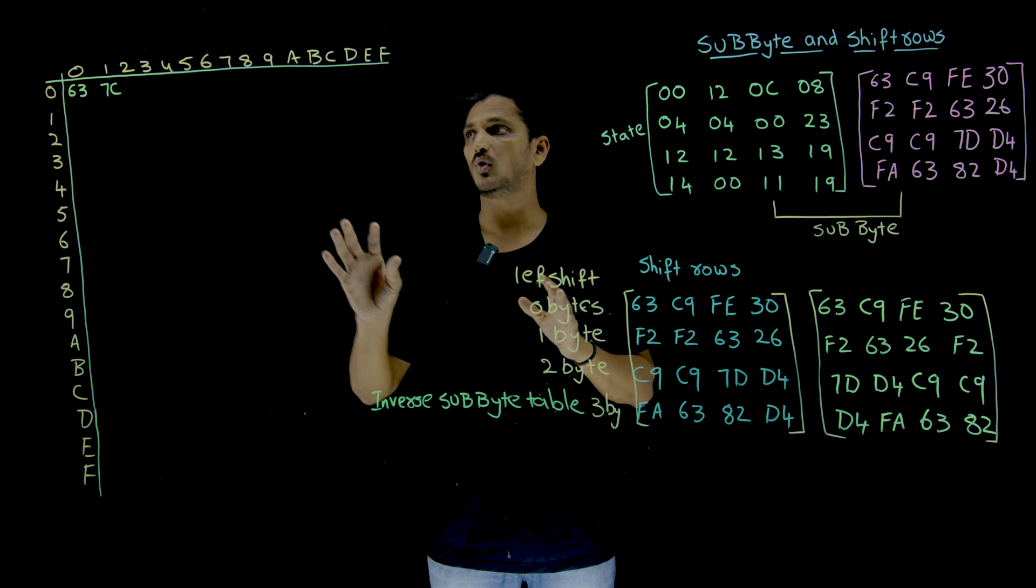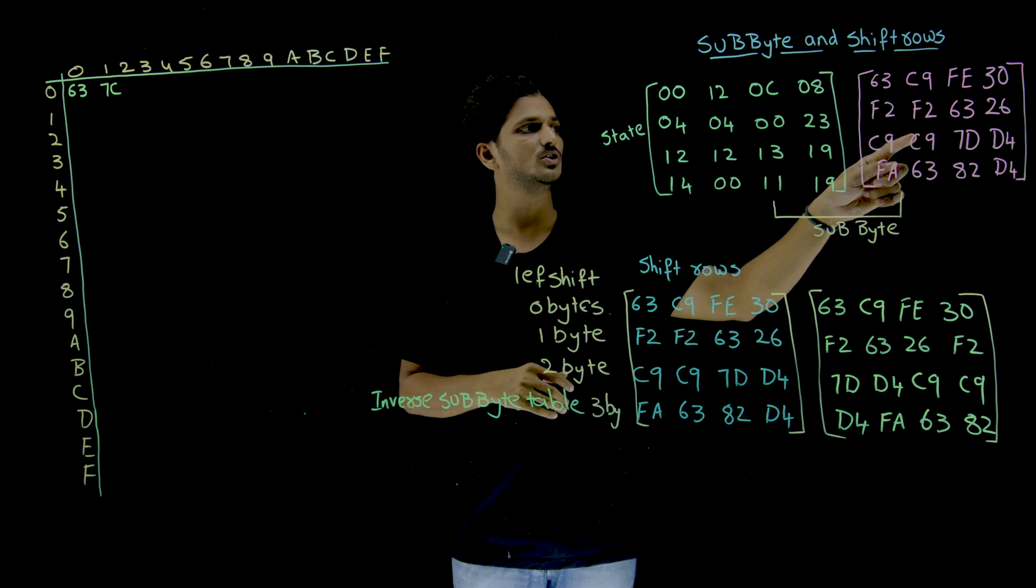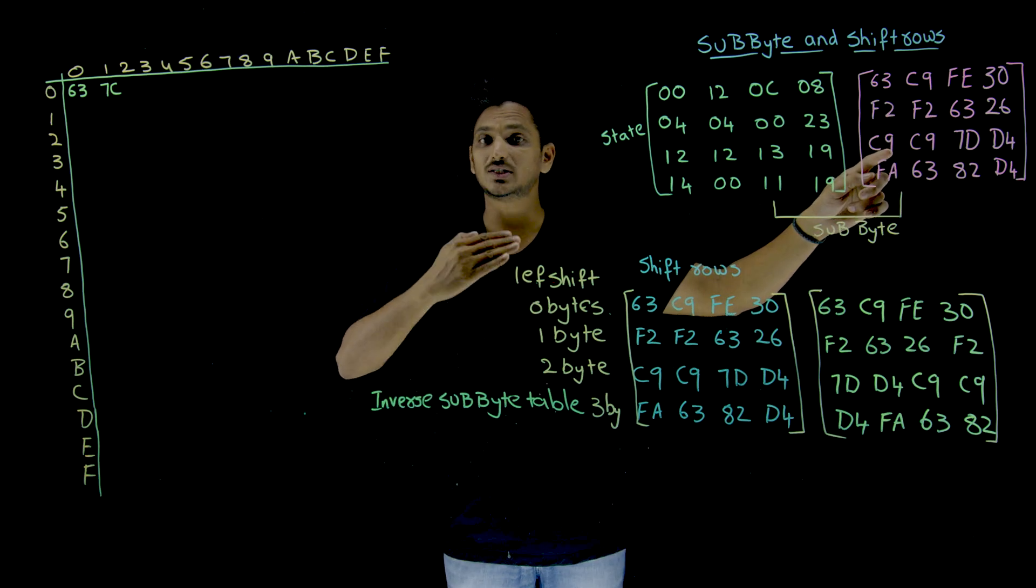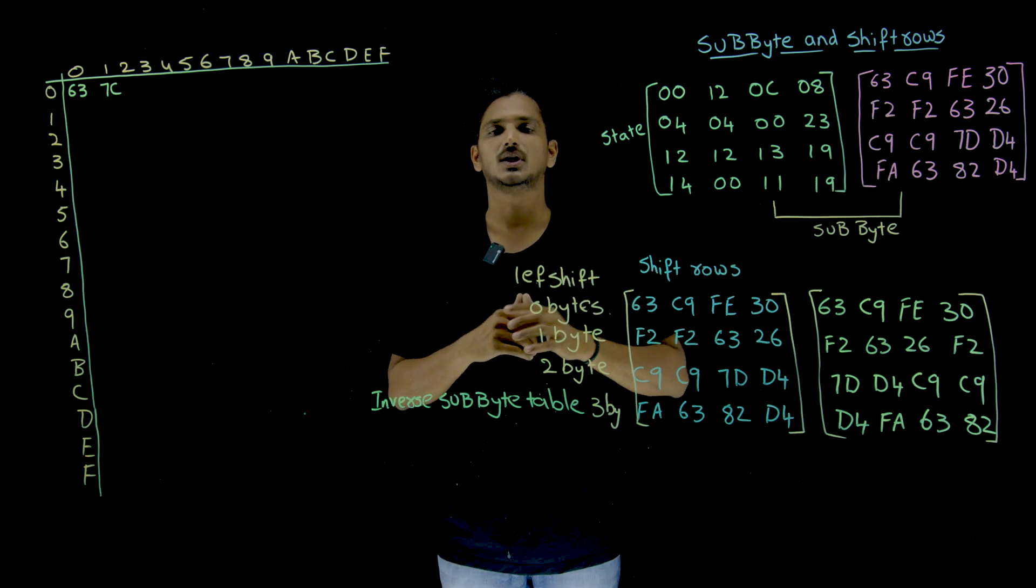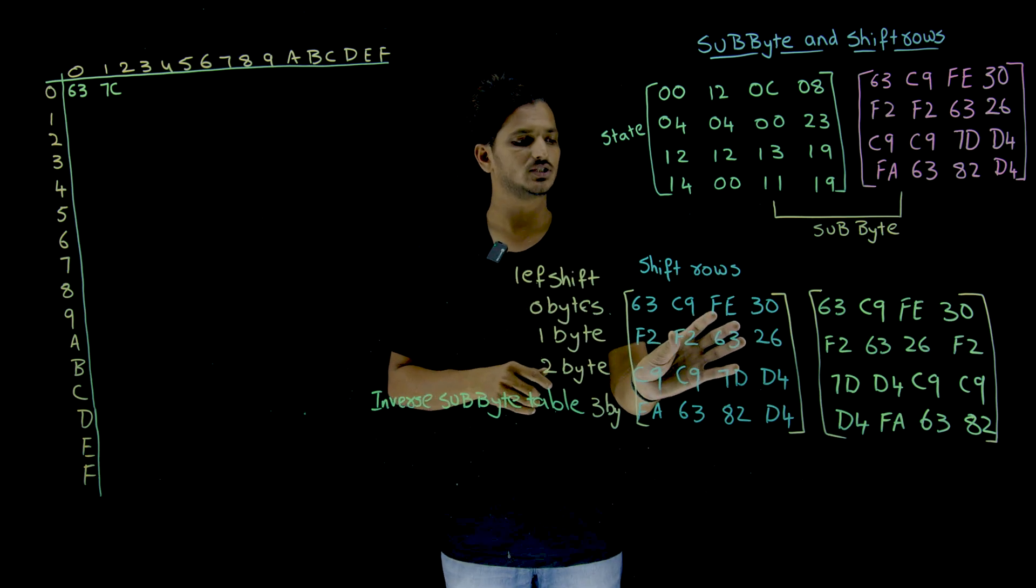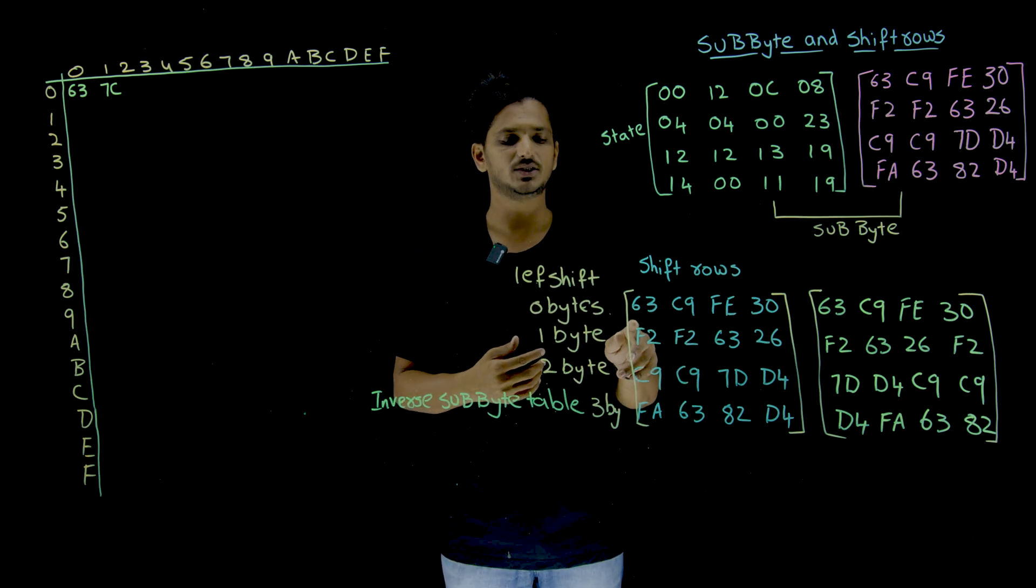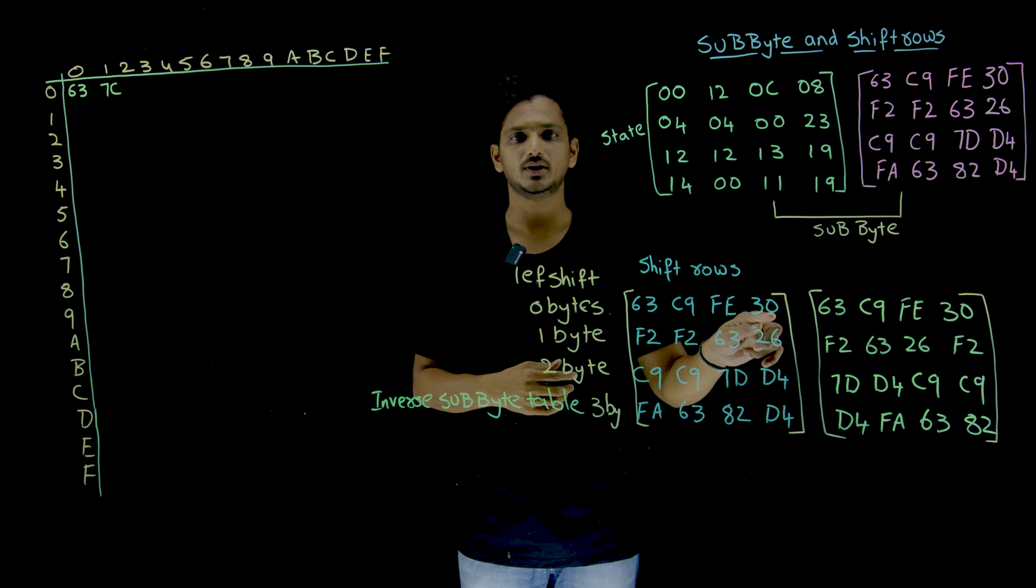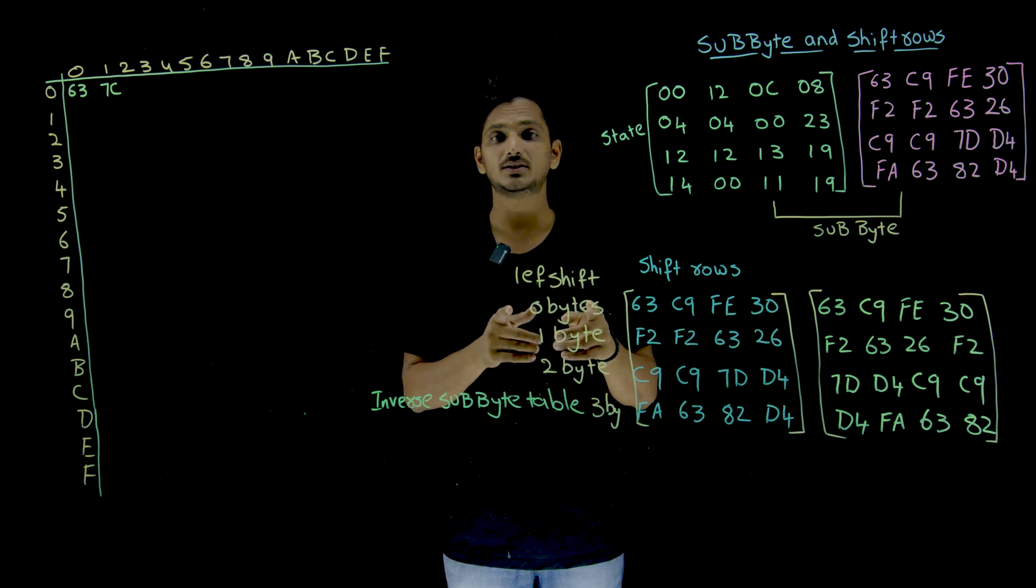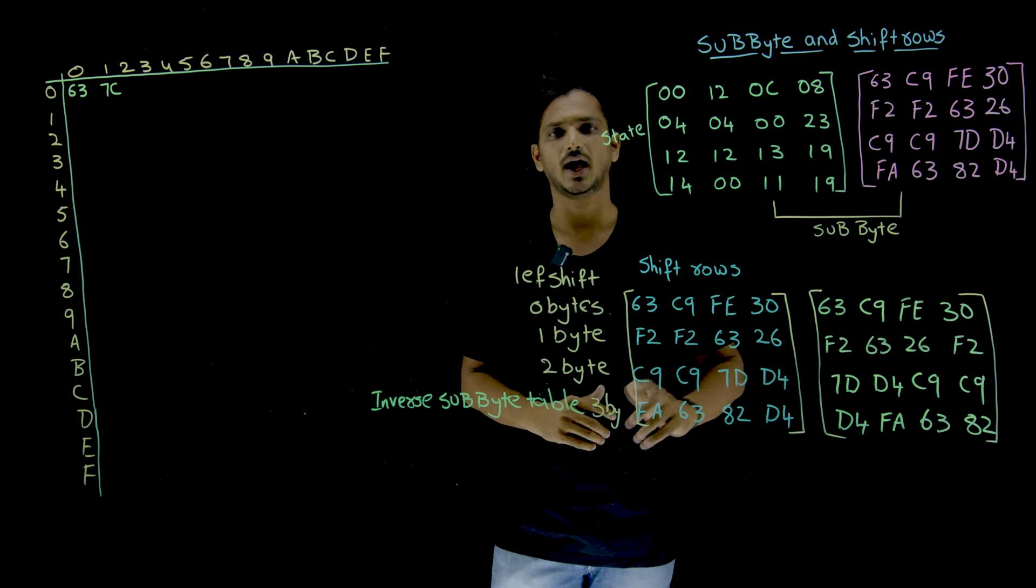Now you may understand what substitution byte means. Now, this is the output which you got after substitution byte. So this will be sent to the second stage. What is the second stage? Shift rows is the second stage. Here it is taking left shift operation. So this is the same thing we have written here. So shifting will be done. Then how it will be shifted is that the first row is shifted zero bytes. Here byte-level shifting is done. Left shift means circular left shift operation. Zero byte means as it is. That is why our output is as it is.